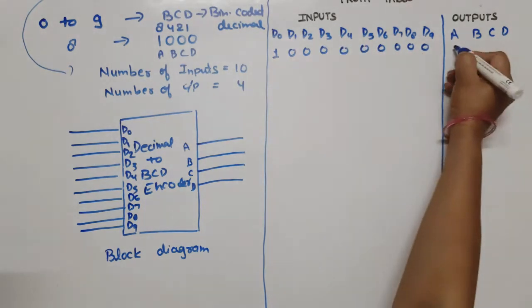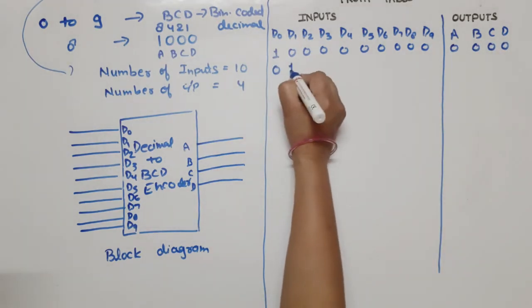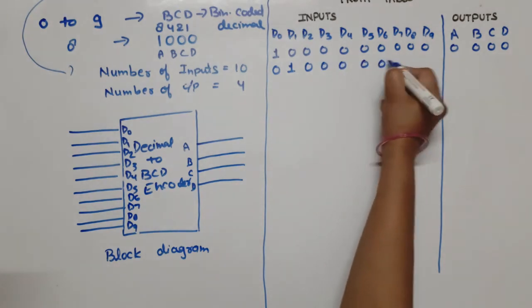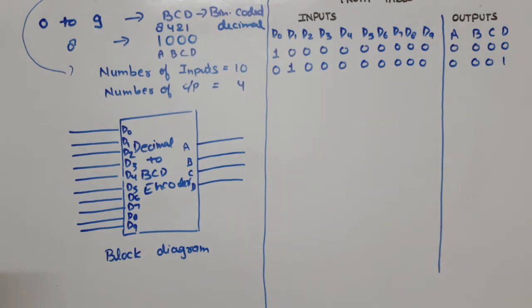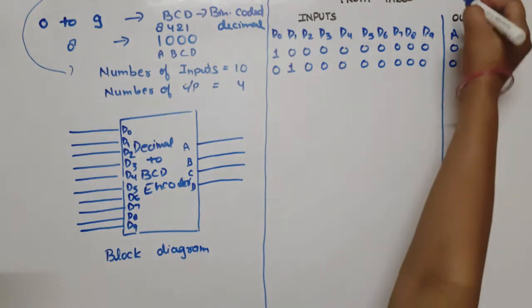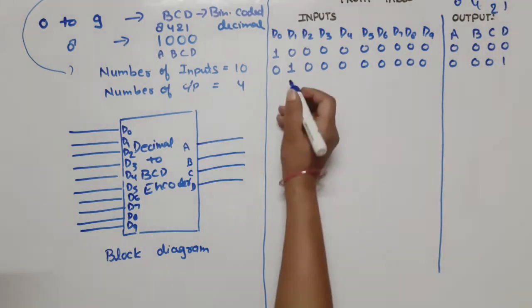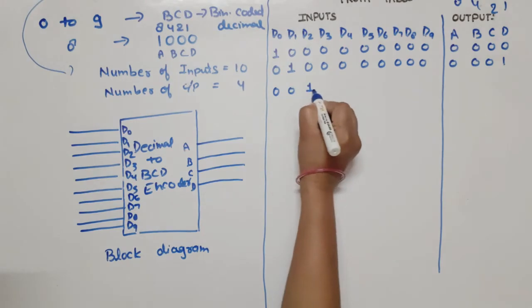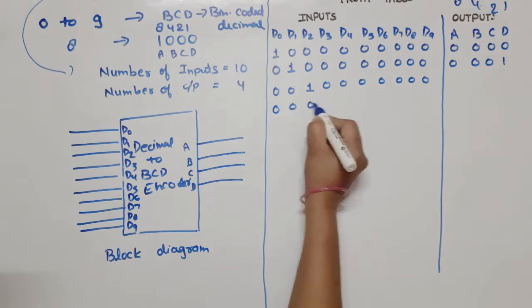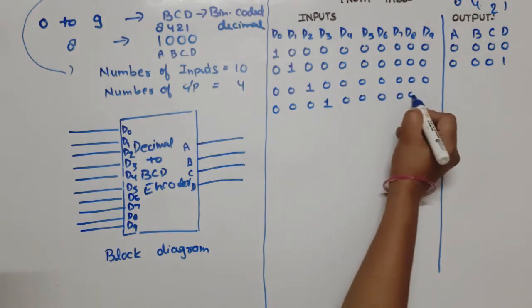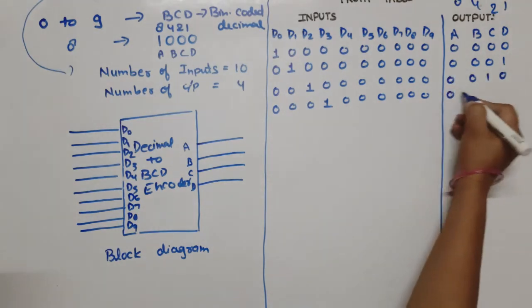D0 in BCD we write as 0000. Now D0 zero, D1 high, remaining all zero. Binary equivalent is one - in BCD we write 0001. Remember A's weight is 8-4-2-1, whichever weight required will be one. For D2 high, remaining all zero. For D3 high, remaining all zero - output is 0011.